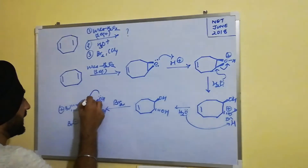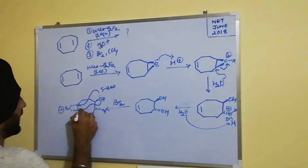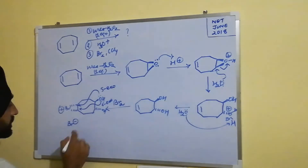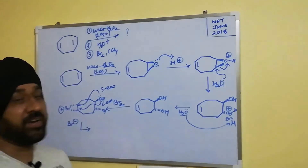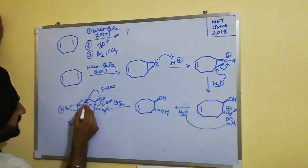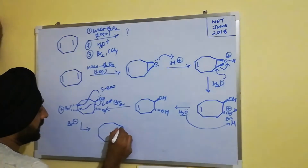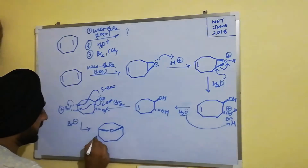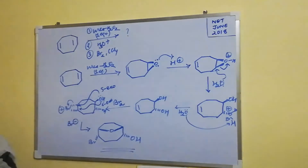There are two possibilities: the oxygen can attack in a 5-exo fashion or a 6-exo fashion. Since the answer options given don't include a six-membered product, the reaction preferentially proceeds via a 5-exo intermediate. With the oxygen attacking from the front side and the leaving group being released, we obtain the final cyclized product.